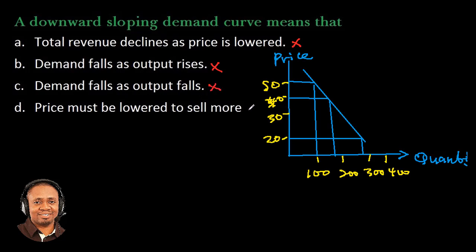What about option D? Price must be lowered to sell more. Definitely. When the price is lowered to like 20, you can see that the demand has increased. So when the price is lowered, the demand is higher. That means more is being sold. So option D is the right answer. Thank you for watching.